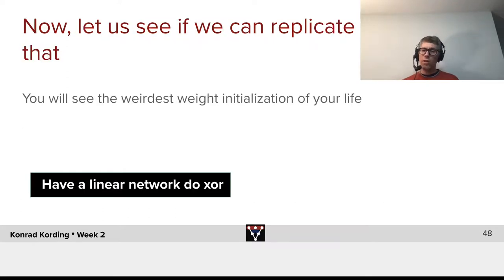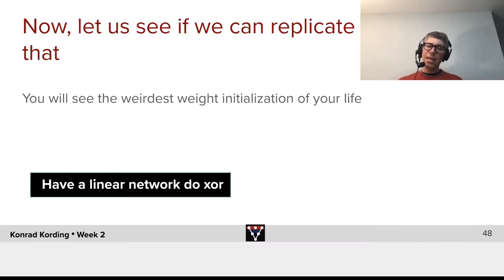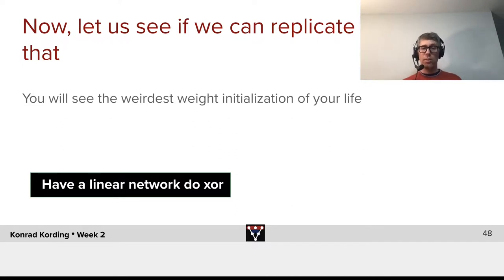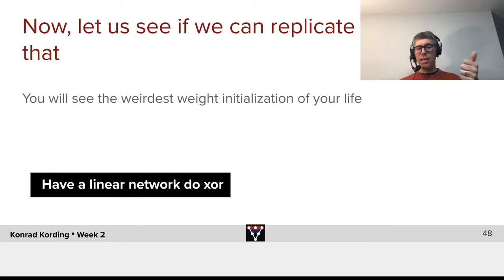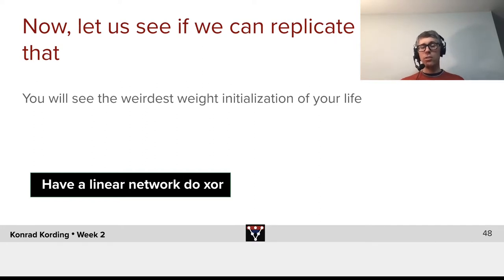Now, we will not be doing MNIST, but let's see if we can solve the XOR problem with it. What is the XOR problem? It has two inputs. If they're both on or both off, the output will be zero. If one is on and the other one is off, or the other way around, it should say true — it should be on.